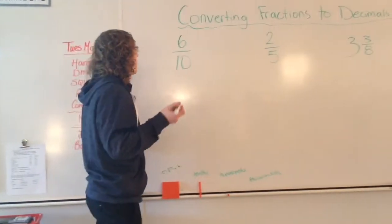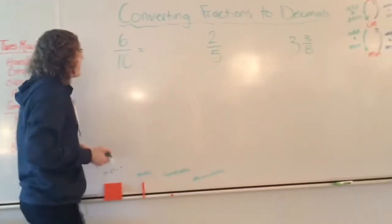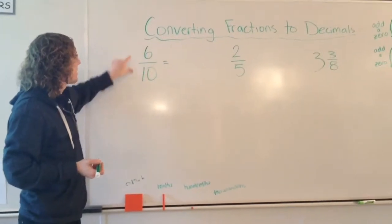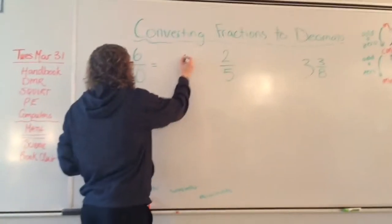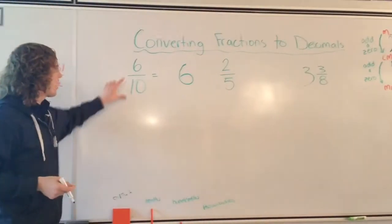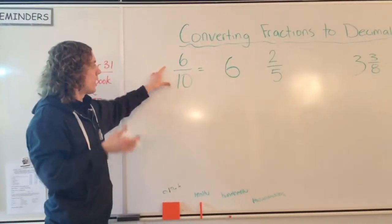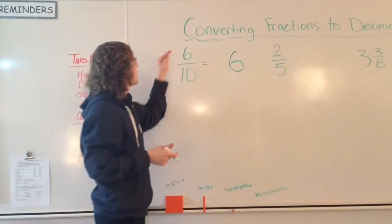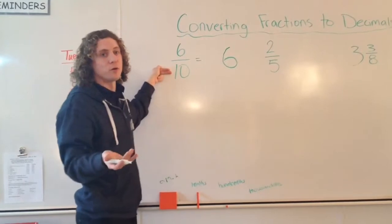We take the 6 that's at the top and we'll move it right here. Now the 10 is represented as a whole. This is saying that we have six out of a possible whole.